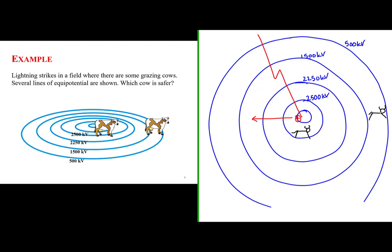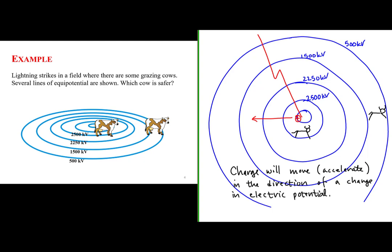The main concept to know is that charge will move and accelerate in the direction of a change in electric potential. For a positive charge, that will be from high to low potential. And for negative charges, that's low to high potential. We know there must be positive charges that were deposited by the lightning.